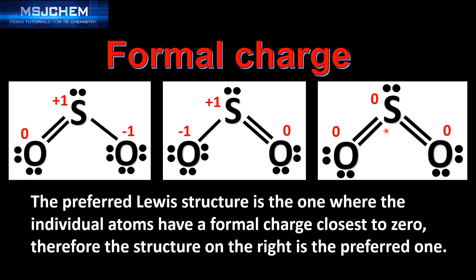An interesting point to note about the Lewis structure on the right: it has the sulfur atom expanding its octet with ten electrons in its valence shell. The sulfur atom is able to do this because it's in period three and is able to use its d orbitals for bonding.